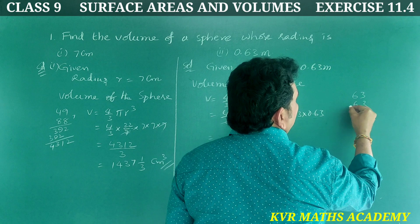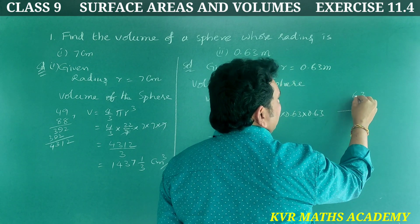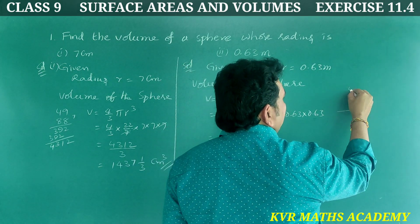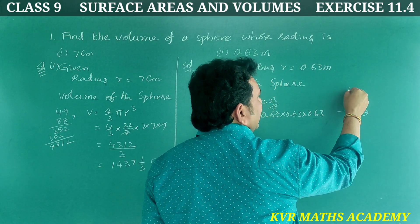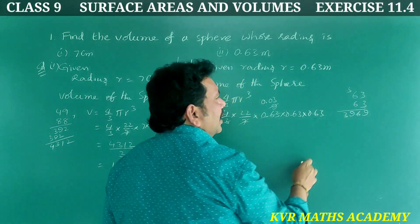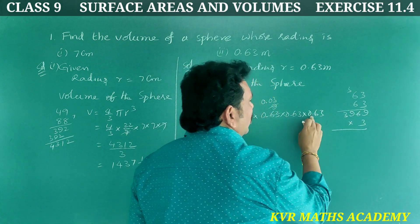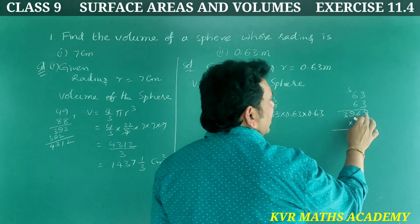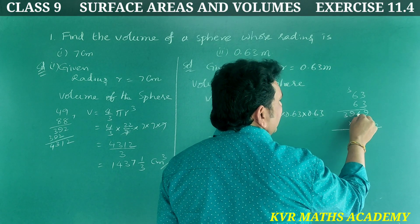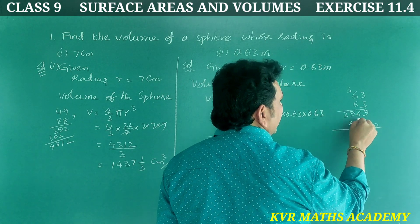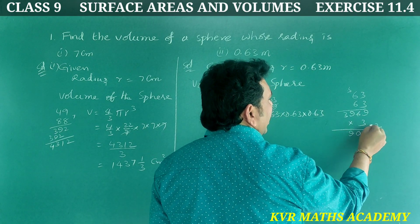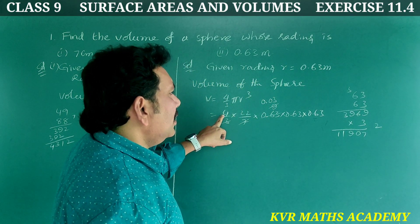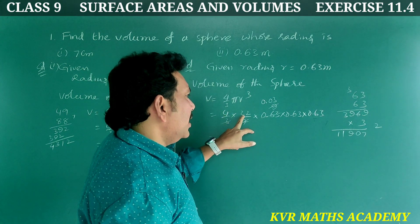Computing 63 × 63: 3 × 63 = 189, 6 × 63 = 378, giving 3969. Then multiplying further with 4 into 22 = 88.